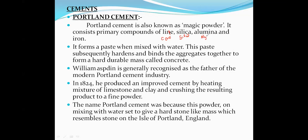Portland cement contains lime, silica, and alumina — Al2O3. It also contains iron oxide. These compositions present in the cement increase the strength of the cement and are identified through their hydraulic property.